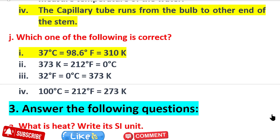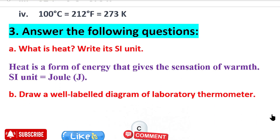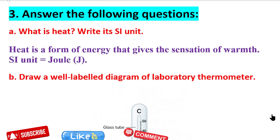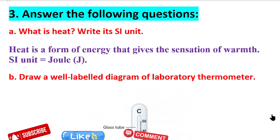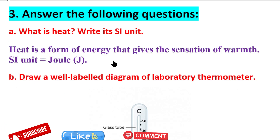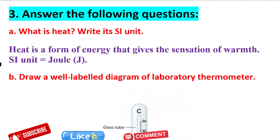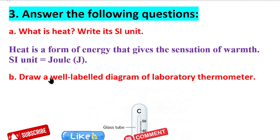Which of the following is correct? The right answer is: 37 degrees centigrade equals 98.6 degrees Fahrenheit equals 310 Kelvin. Question 3: What is heat? Write its SI unit. Heat is a form of energy that gives the sensation of warmth. Its SI unit is Joule.